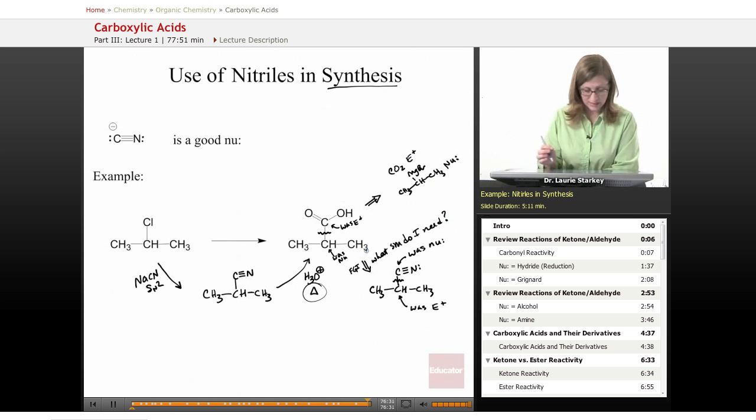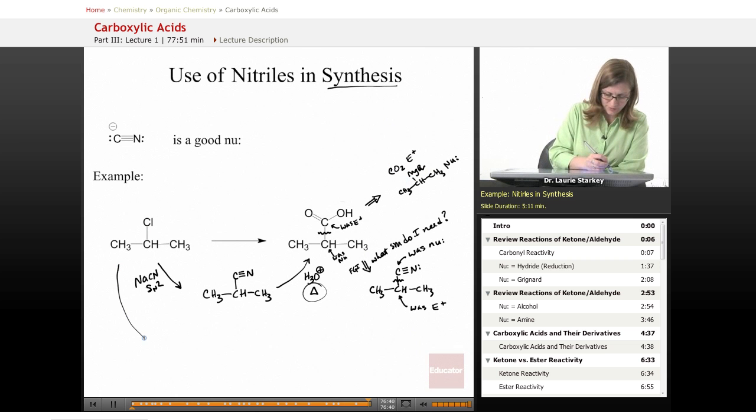That's another approach we can take. We're starting with a chloride. I know with the Grignard we usually think magnesium bromide, but remember a Grignard can be any halide, so we don't have to change that. We could just throw in our magnesium right away and make the magnesium chloride Grignard.